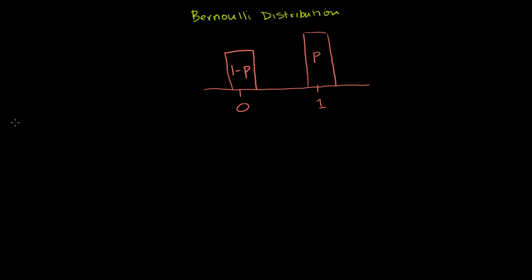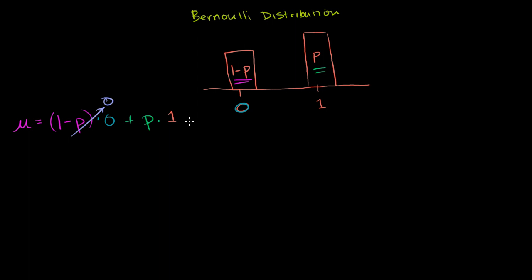So what is the mean? That's just the probability-weighted sum of the values this distribution can take on. There's a 1 minus p probability of getting 0, so that contributes (1 minus p) times 0. And there's a p probability of getting 1, so that contributes p times 1. Zero times anything is 0, so that cancels out, and p times 1 is just p. So the expected value of this distribution is p — notably a value you cannot actually take on in this distribution.